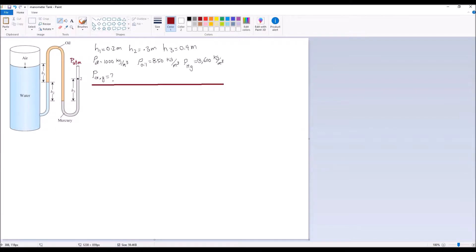The information given is water density 1000 kilograms per meter cubed, oil density is 850 kilograms per meter cubed, and the density of mercury is 13,600 kilograms per meter cubed. And H1 here is 0.2 meters, H2 is 0.3 meters, and H3 is 0.4 meters.